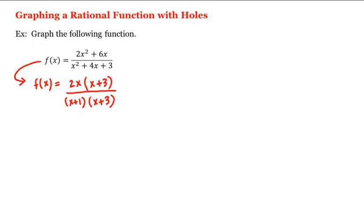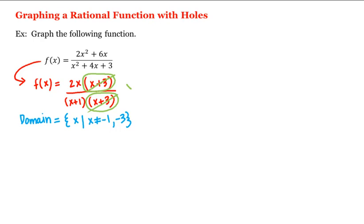Now let's notice a few things about this function. Its domain is the set of x values such that x is not equal to negative 1 or negative 3, because then we'd be dividing by 0. Moreover, f does have common factors, which means it's not in simplest form. We can put it in simplest form by canceling the (x+3) factors, as long as x does not equal negative 3. That is, f(x) = 2x/(x+1), as long as x does not equal negative 3.